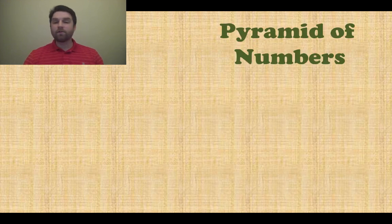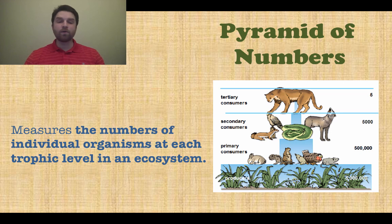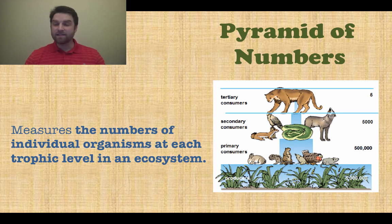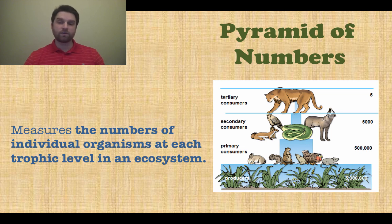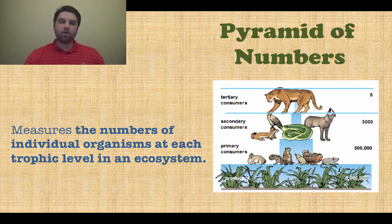The pyramid of numbers, just like it sounds, represents the number of individual organisms at each trophic level. There are lots and lots of different producers — lots of plants. There are fewer primary consumers, even fewer secondary, and even fewer tertiary consumers. That's how a pyramid works. I hope you understood this, and good luck studying.